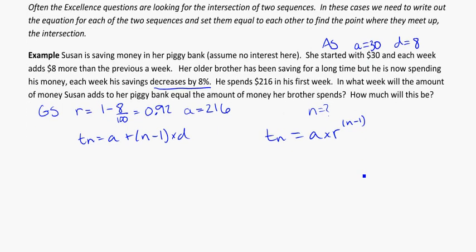We can just write in the values here. So for her, it's 30 plus n minus 1 times 8, and for him, it's going to be 216 times 0.92 to the power of n minus 1. And we're going to set these equal to each other because we want to know at what point do these two equations, these two sequences, equal the same thing.